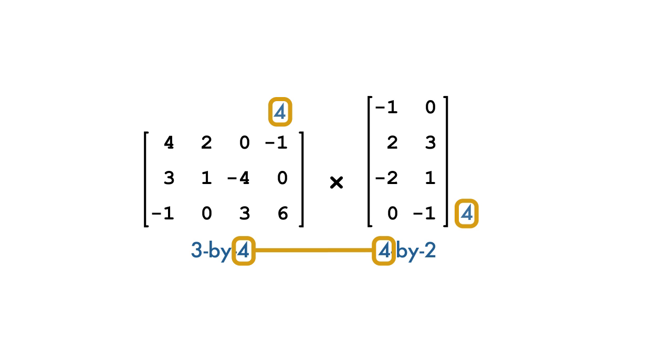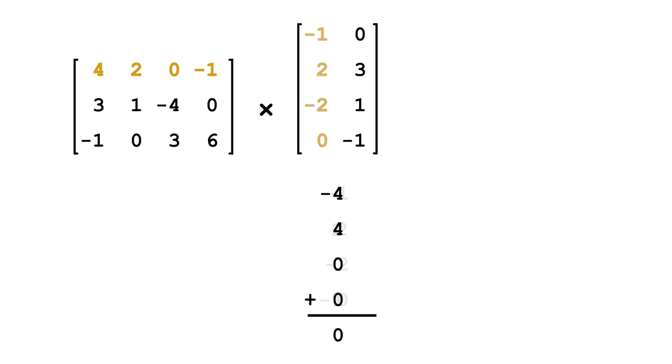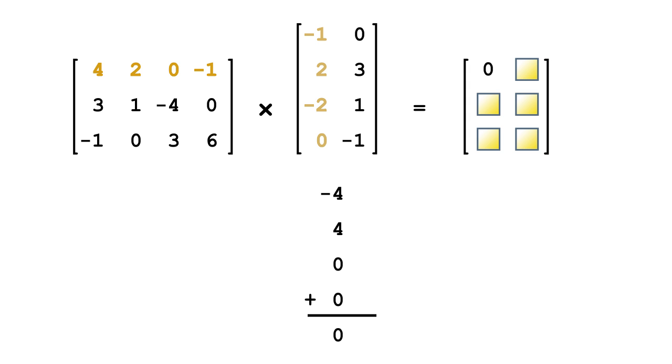For the multiplication, each element of the first row of the array on the left is multiplied by the corresponding element of the first column of the array on the right. The resulting products are then summed together to produce one element of the final array.